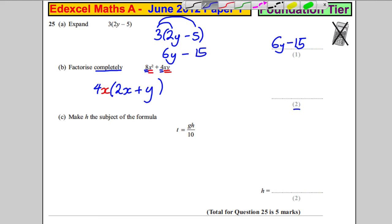Make h the subject of the formula for part c. So, the first thing we could do is we could multiply both sides by 10. This is gh divided by 10. So if we times both sides by 10, we would have that 10t's is equal to gh. And making h the subject of the formula means we want h by itself on one side. We've got h times g. Let's divide both sides by g.